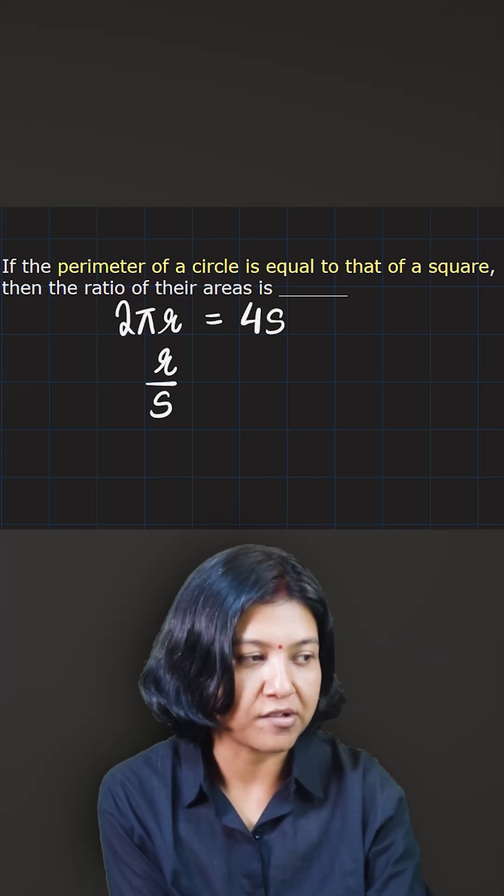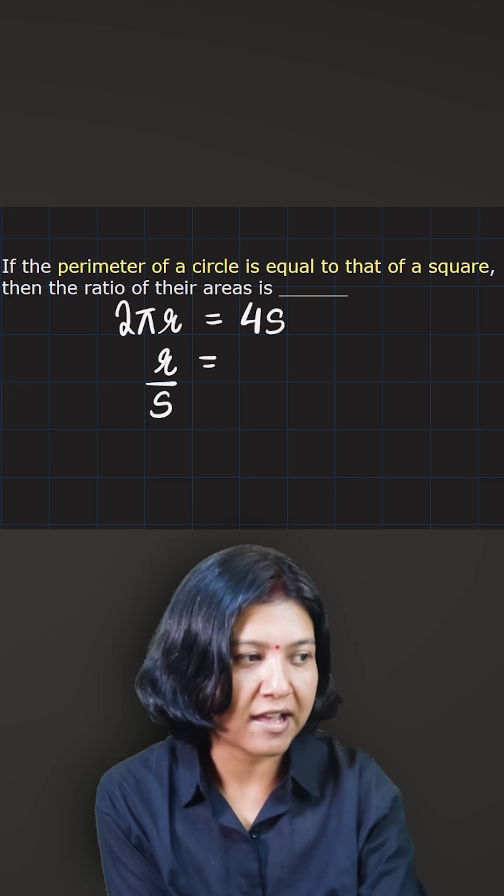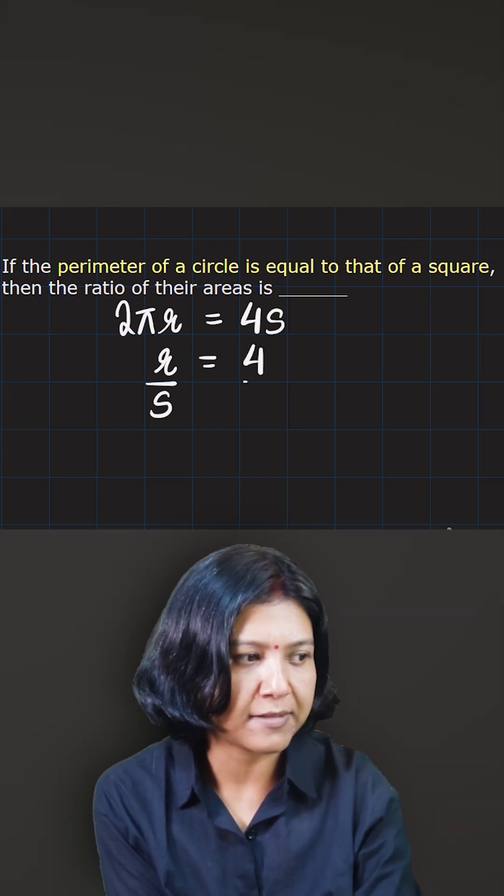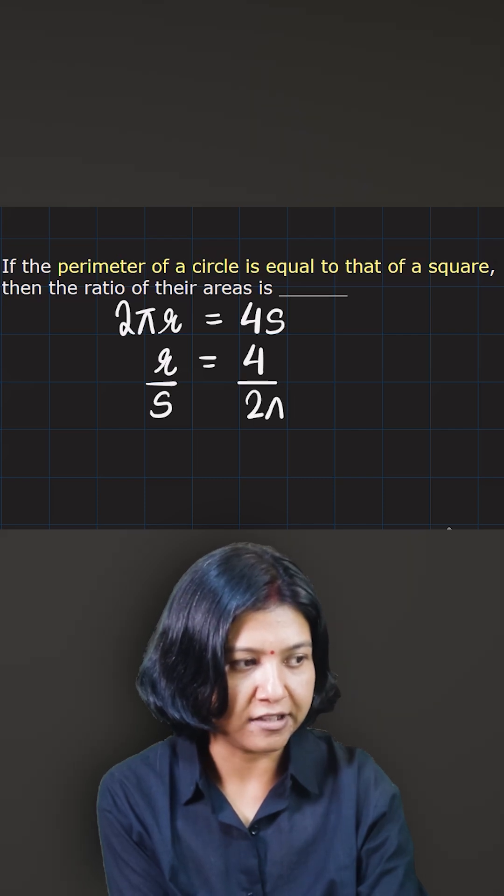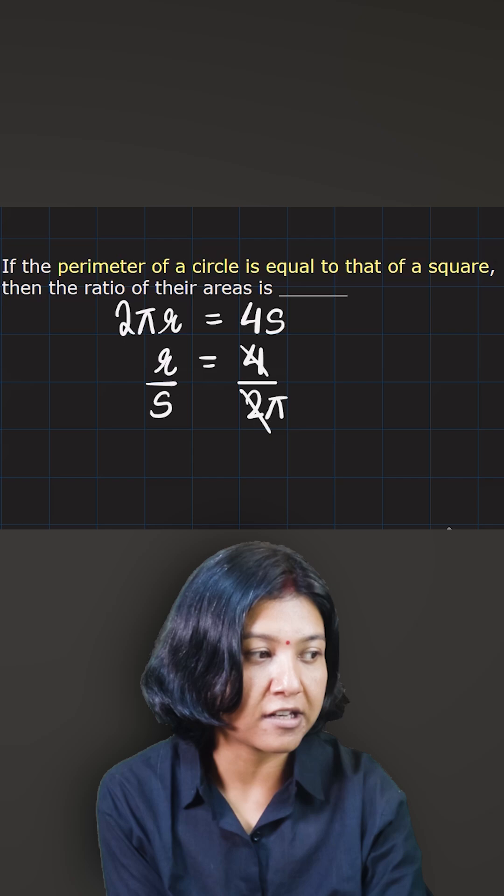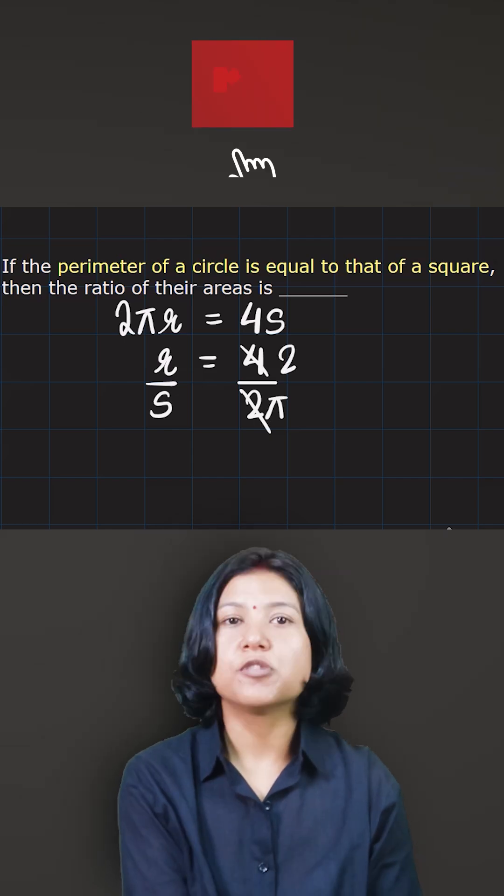I want to keep s and 4 in the cross-multiplying position like this, and because r has been multiplied with 2π, I'm going to write 2π right here at the bottom. So 4 and 2 cancel out, telling me that the ratio of the radius and the side has to be 2/π.